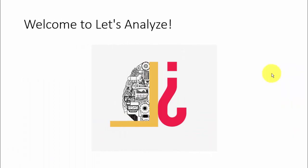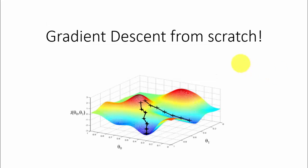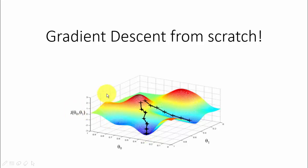Hey guys, welcome to yet another session of Let's Analyze. In this video I'm going to explain the gradient descent algorithm from scratch. As you can see in this picture, from the red part we are going to achieve the blue part, which is the minima of any algorithm — j of theta represents the error here and we want to reach the minima of the error.